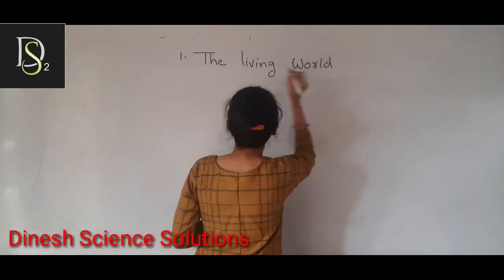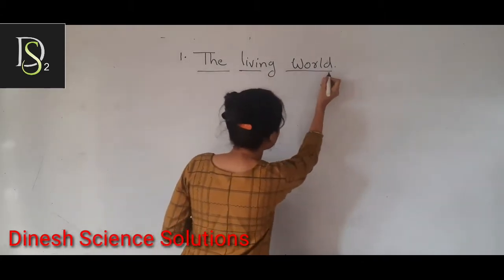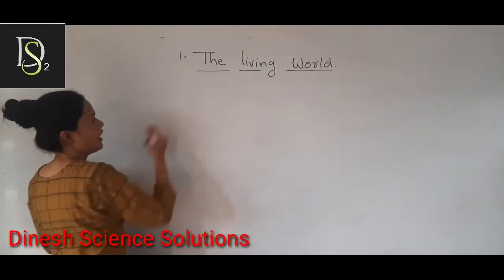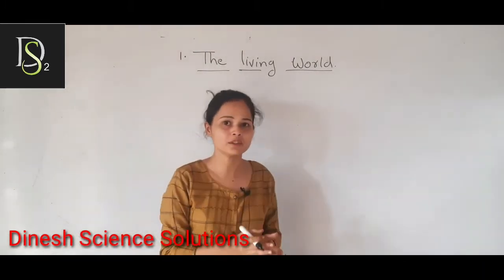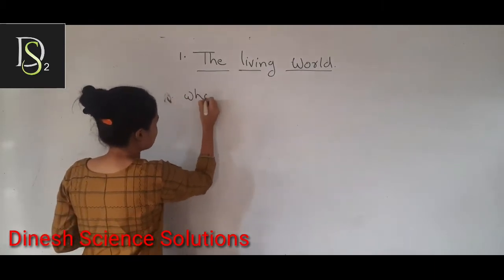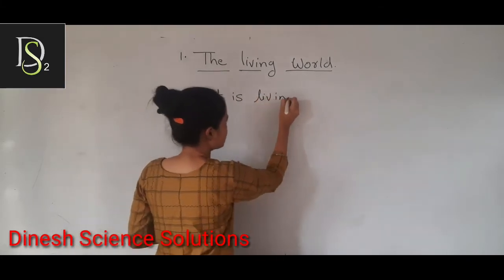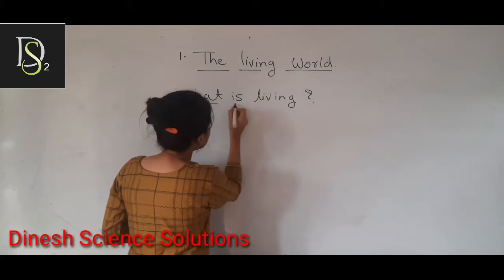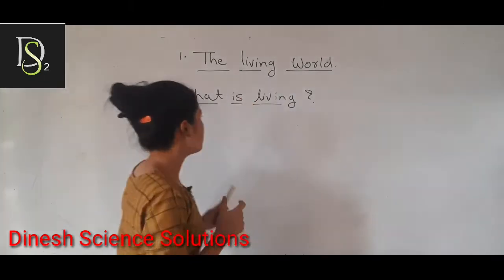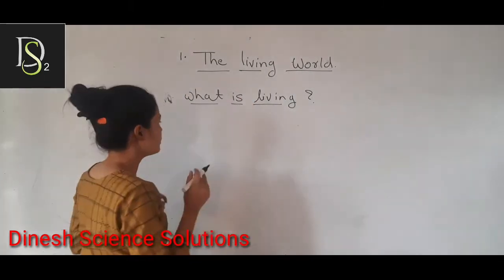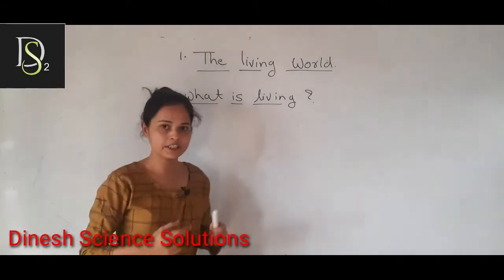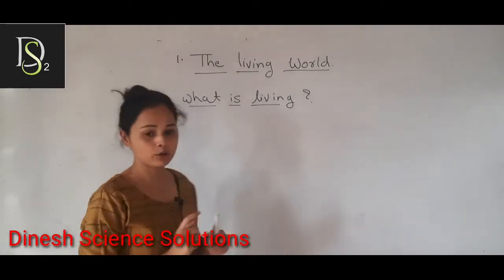Everyone knows what is living and what is non-living, right? This is a very basic chapter. The chapter starts with the question: What is living? You all know that plants are also living, right? But why do we say that plants are living? They cannot move, they cannot displace from their place. So why do we say that plants are living? There are some criteria, some particular features in this chapter which will define what is living and what is non-living.